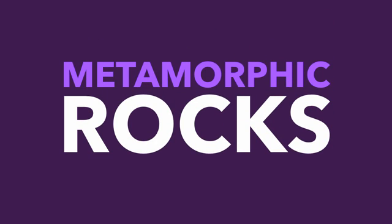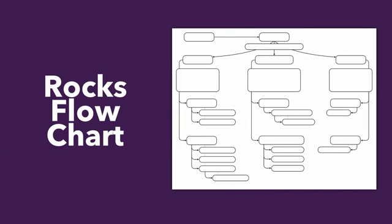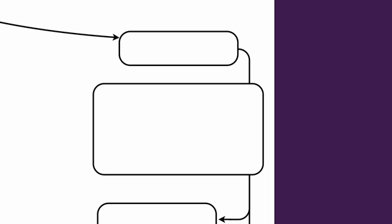In this video we're going to be talking about metamorphic rocks. Please get your rocks flowcharts ready so we can fill in our final third column. Rocks are classified according to how they form. Igneous form from cooling and solidified magma. Sedimentary form from compacted and cemented sediments.